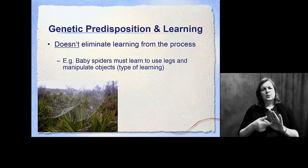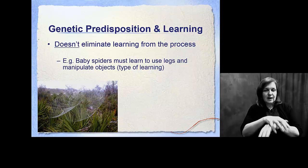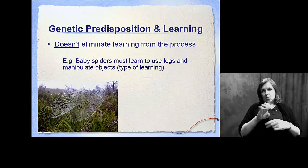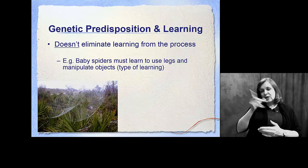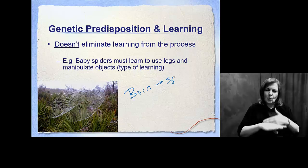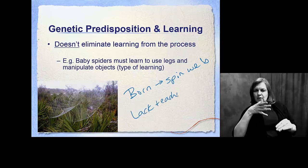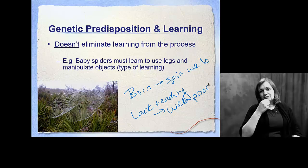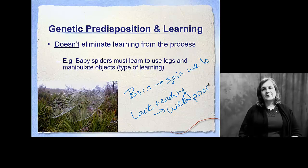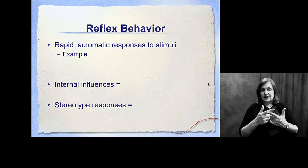Let me show you a genetic predisposition to learning using spiders. Spiders are born with the innate ability to build a web. However, to build that web well, they actually have to be guided by their mothers. They're born with the ability to spin a web, but if they lack teaching by their mothers or by watching another spider, their web is poor and they won't catch any prey. So this hardwired, innate sense to spin a web is there — you just have to tweak and modify it so that it works to the advantage of the organism.